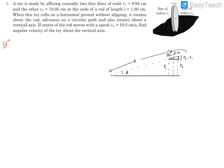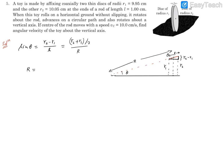These two are similar triangles. If we apply sine theta: for the small triangle, sine theta equals the perpendicular, which is r2 minus r1, divided by the hypotenuse, which is L. If we apply it on the bigger triangle, this distance — since r1 is one radius and r2 is the other, the midpoint gives us (r2 plus r1) divided by 2, divided by R. This helps us find the distance of the center from the rotation point. Simplifying: R equals (r2 plus r1) divided by twice (r2 minus r1), times L. Since we know r1, r2, and L, we can find this distance.